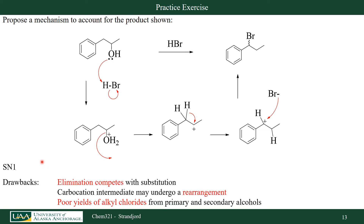Some of the drawbacks of SN1 reactions are that elimination will compete with substitution, so I probably get some elimination products with a double bond. As we see in this example, rearrangements occur. Also, I get poor yields of alkyl halides that involve chlorine. So far we've only talked about HBr and HI — HCl does not do very well in substitution reactions for primary and secondary alcohols.